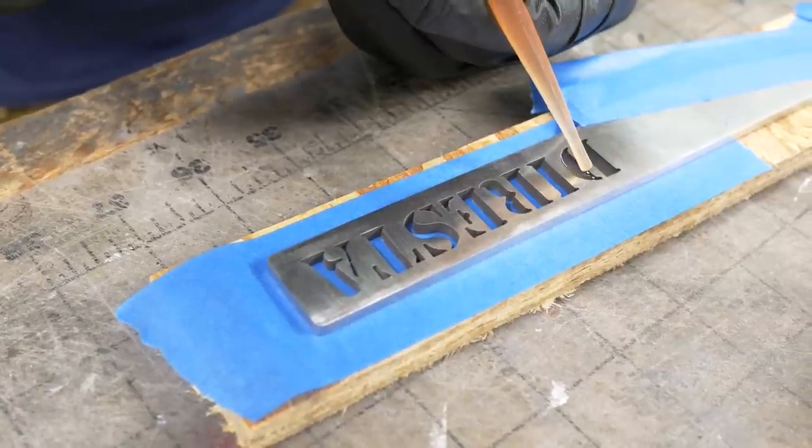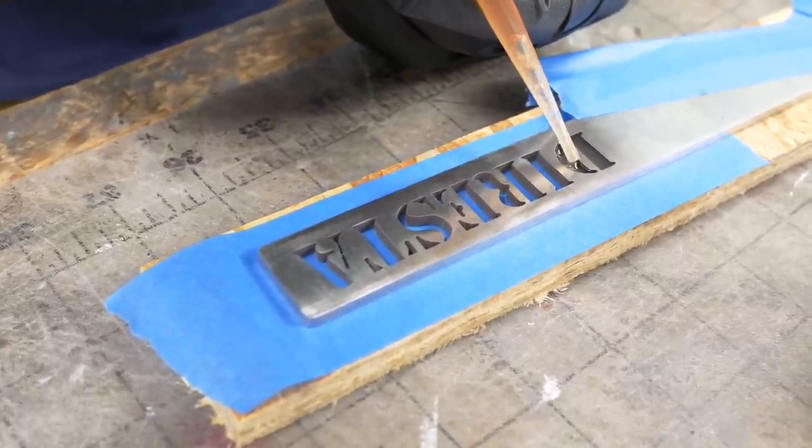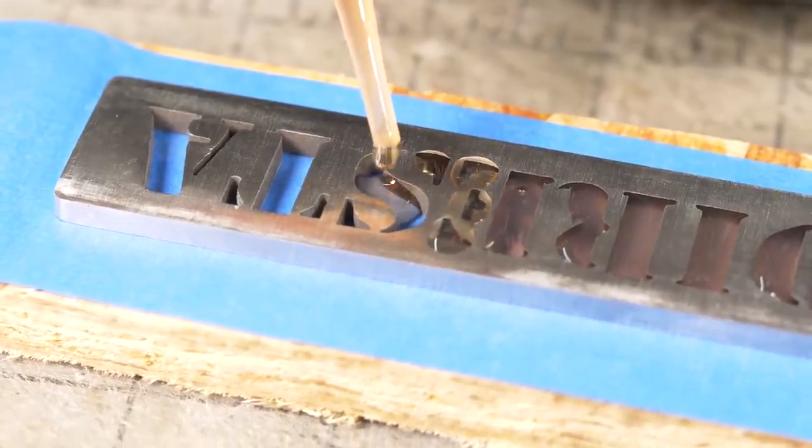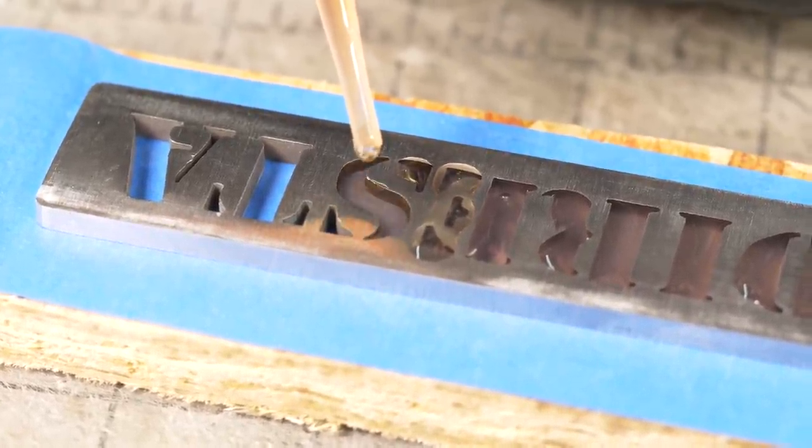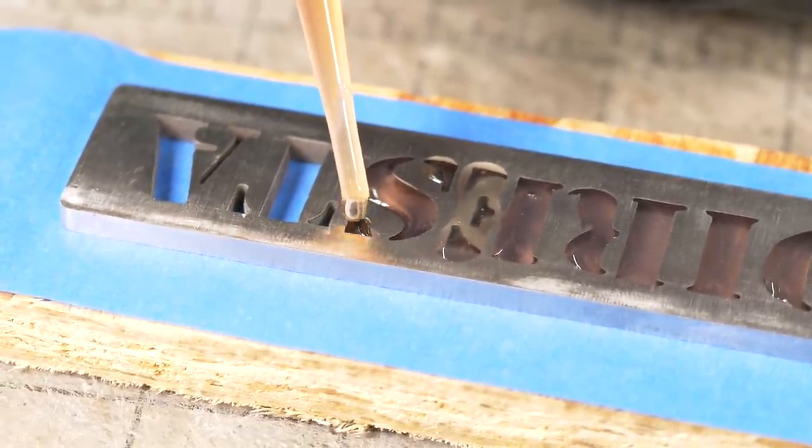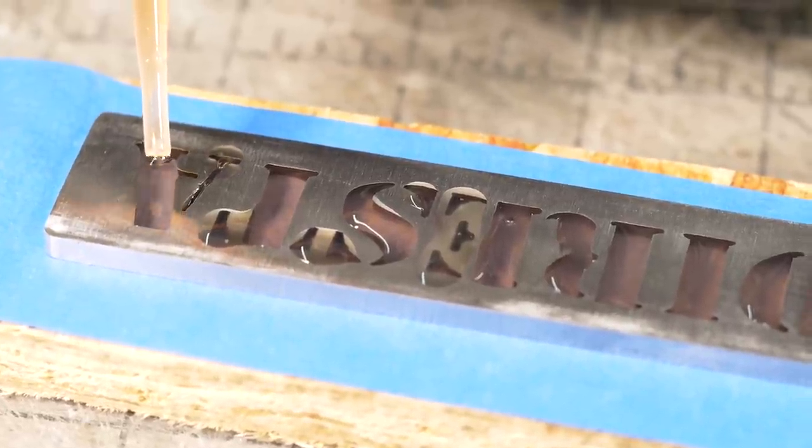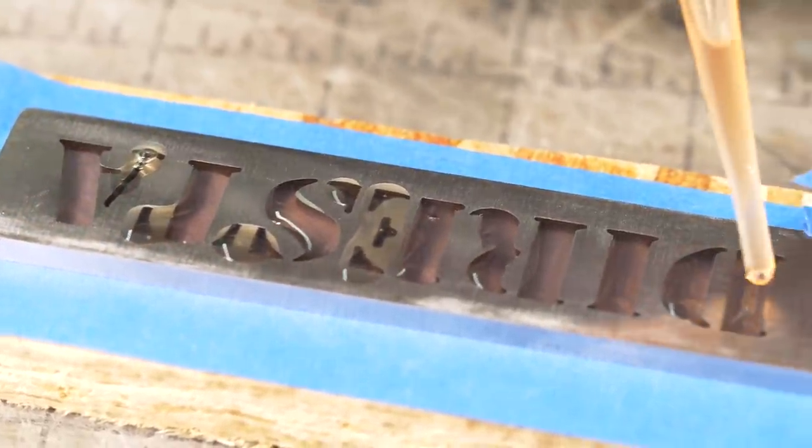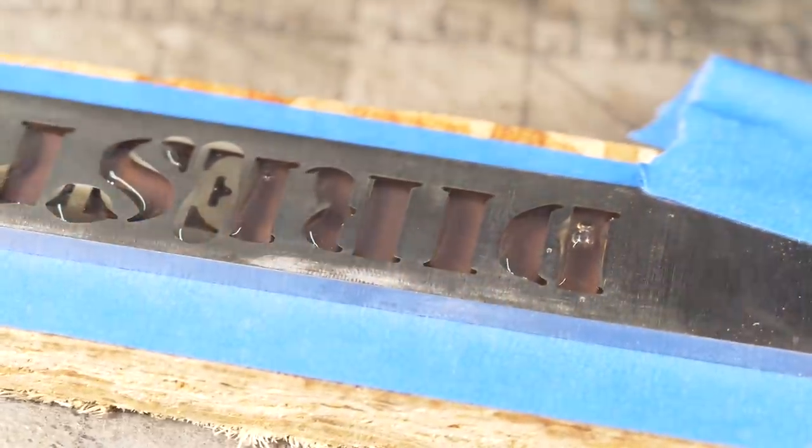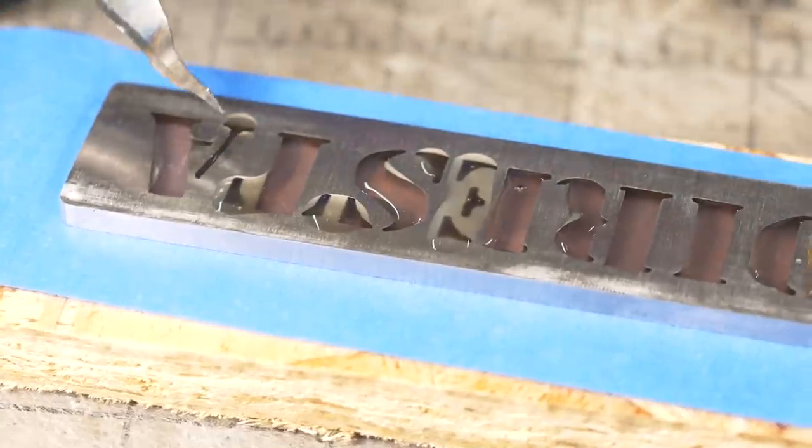I've got my eyedropper here. Just going to fill it up with some resin and use that to fill up my letters. Oh, that is satisfying. Except for that bubble. It looks pretty good. Just going to make sure there aren't any bubbles. I'll throw this in the pressure pot to make sure that it definitely doesn't have any bubbles in it. And let it cure.